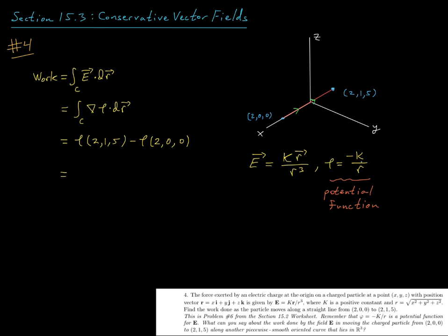Nothing to it. Now if I plug in (2,1,5), this is going to give me minus k divided by the radial distance from the origin out to this point (2,1,5). I'm going to take the square root of the sum of the squares of these coordinates, so that's going to give me the root of thirty, because it's four plus one plus twenty-five.